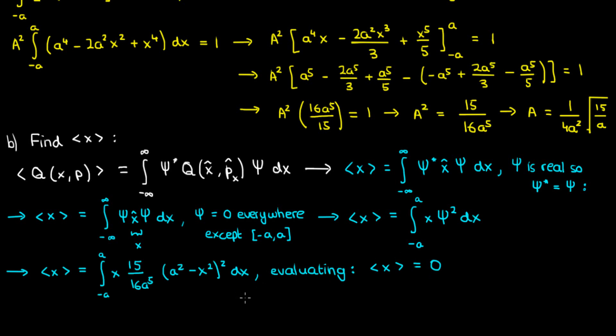you'll get 0. This makes sense when you look at the integral, because the function you're integrating is an odd function with only odd powers of x. When you integrate an odd function over a symmetric interval like -a to a, you get 0.